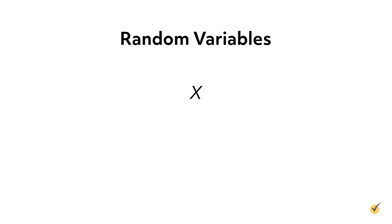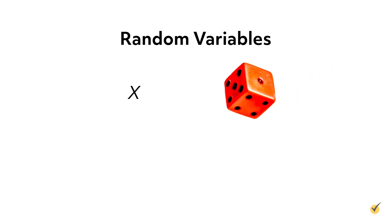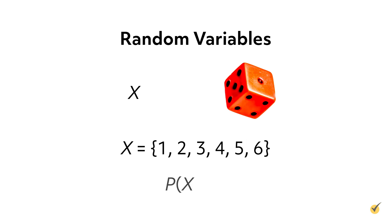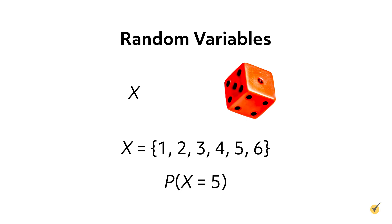The last term we will discuss is random variables. In statistics, we usually use the capital letter X to denote a random variable, and it is simply a placeholder for the thing we are observing. For example, when rolling a six-sided die, we would say that the random variable X describes the outcome of rolling the die. We can list out all the possible values that X can take using set notation. While this may look a little funny at first, it is simply an abbreviated mathematical way of saying the probability that we observe the specific outcome little x. We could use this to write the probability of rolling a 5 on a die as the probability of X equals 5 — the probability that our random variable X, representing the die roll, has an outcome of 5.